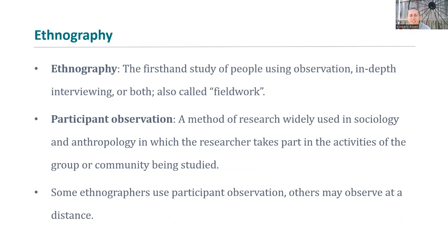Ethnography is a first-hand study of people using observation or fieldwork. A researcher essentially immerses themselves into some kind of group or institution and observes from within. You can also have autoethnographies, where it's really about the researcher within a particular group or structure. Participant observation is widely used in sociology and anthropology, where the researcher takes part in activities of groups, immersing themselves as part of what they're studying. That's a little different from ethnography, where some observation is done at more of a distance.